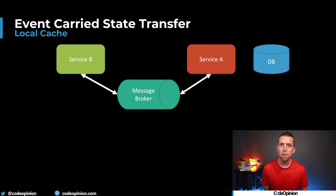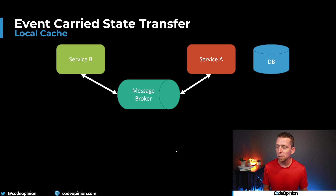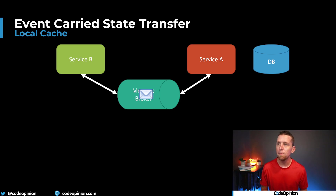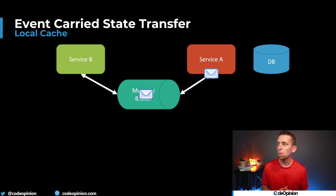Typically when people are working in a decomposed system with many different services and they're using an event-driven architecture, they're really distributing data oftentimes using something like event carried state transfer. So let's say we have two different services — when there's some type of change to some data entity within Service B, it will publish some events to a topic that Service A can consume, and then it has all the data within that event about whatever changed in Service B so it can update its own database and keep a local cache.